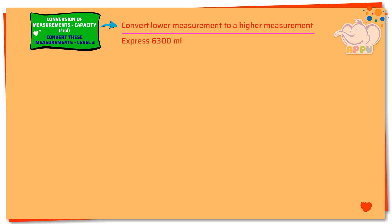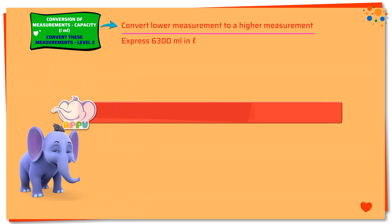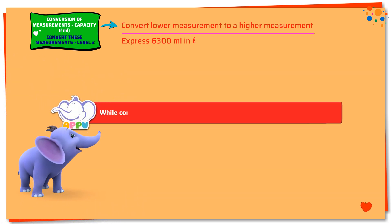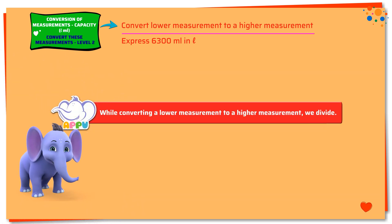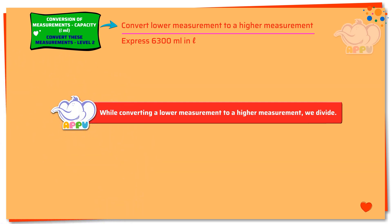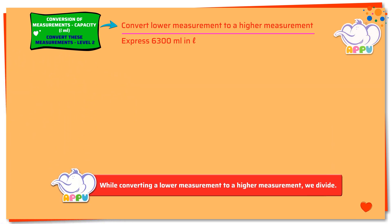Express 6300 milliliters in liters. While converting a lower measurement to a higher measurement, we divide. Here we need to find how much is 6300 milliliters in liters.